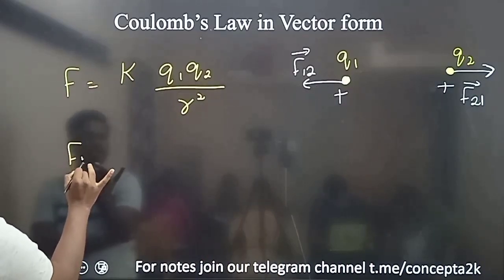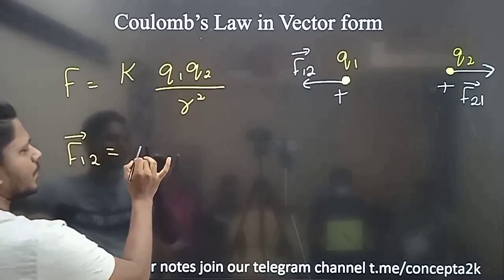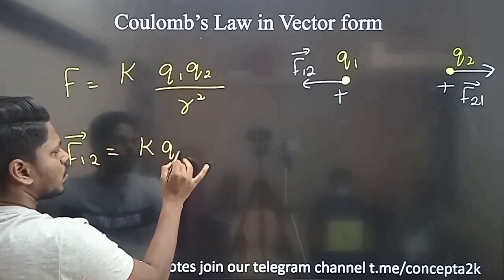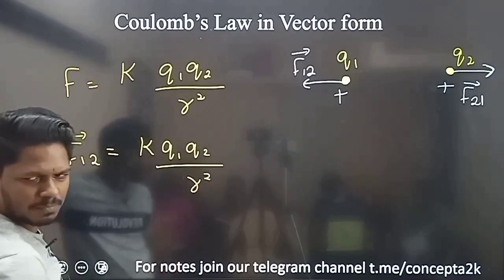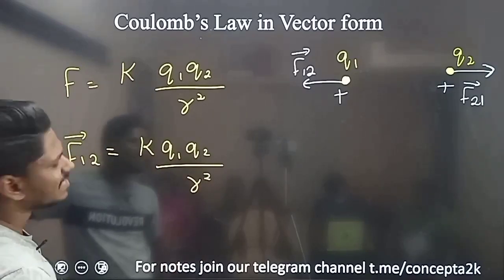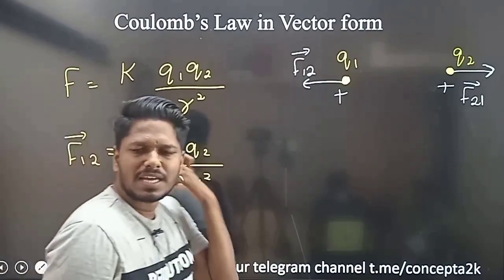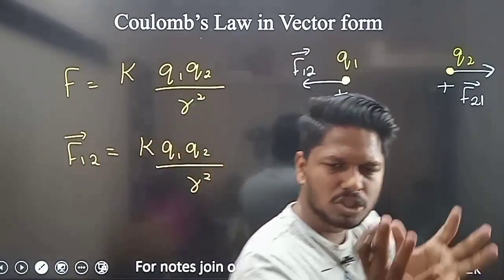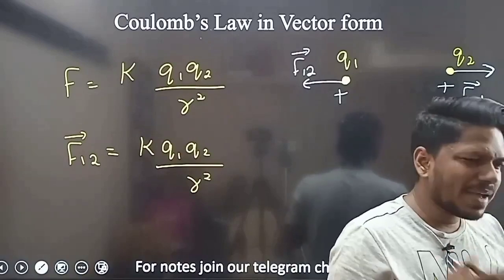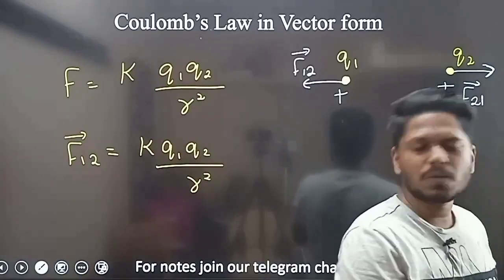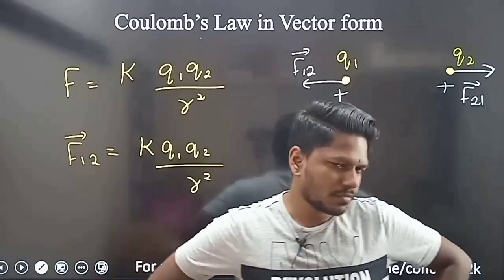Force on 2 due to 1, and force on 1 due to 2, has value kQ1Q2 / r². But again, the right-hand side must be a vector. So in this magnitude, we multiply by the direction — a unit vector quantity.